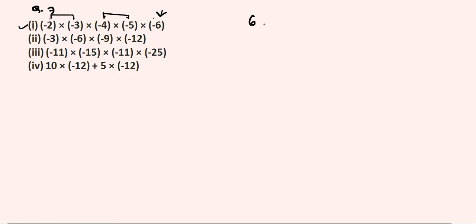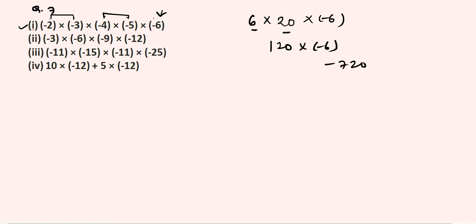Minus 2 into minus 3 gives plus 6. Then plus 6 into minus 4 into minus 5 gives plus 20. Then 6 into 20 is 120, and 120 into minus 6 gives minus 720 — that is the required answer.